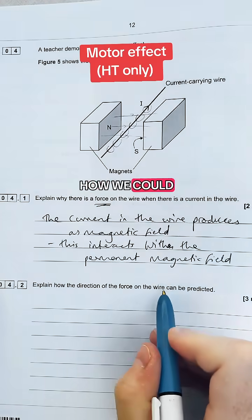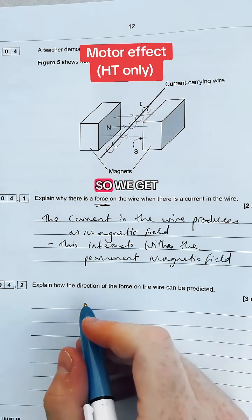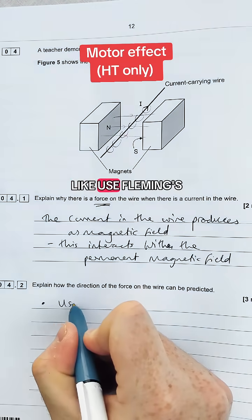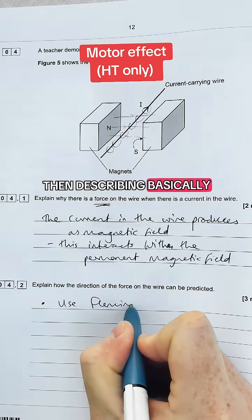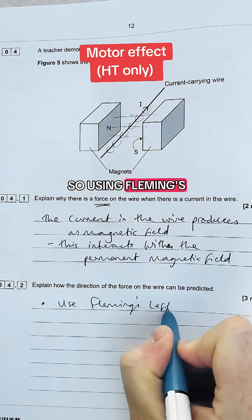Now the next bit is about how we could predict the force on the wire. So we get marks just for saying use Fleming's left hand rule then describing basically what it is. So using Fleming's left hand rule.